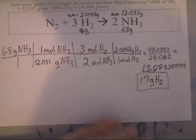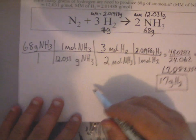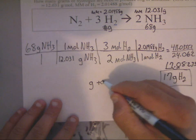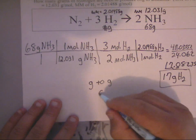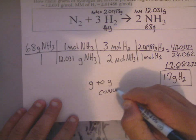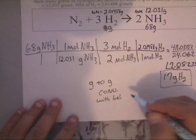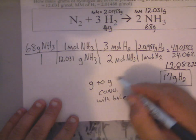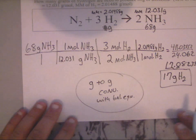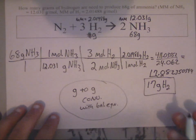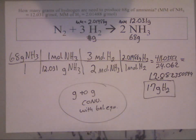So that's how I got that answer of 17 grams of H2, and this is going from grams to grams conversion with a balanced equation. Okay guys, I hope that helps.